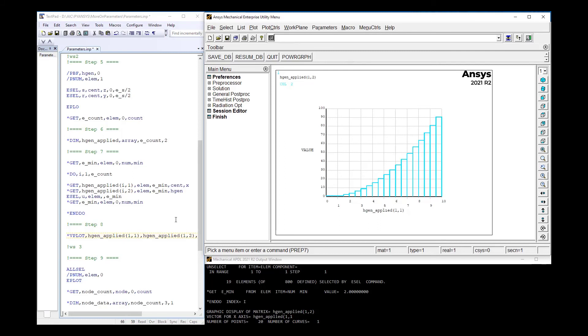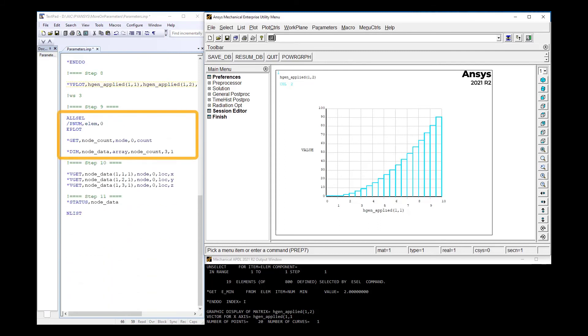For the last workshop, let's use the *VGET command. All the nodes are currently selected and the *GET command is used to get the node count. Then an array is defined with the rows equal to the node count and three columns for the X, Y, and Z location of the nodes.